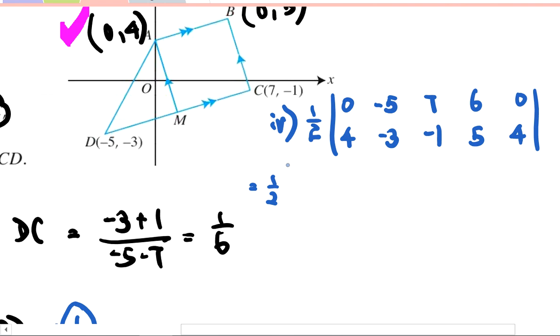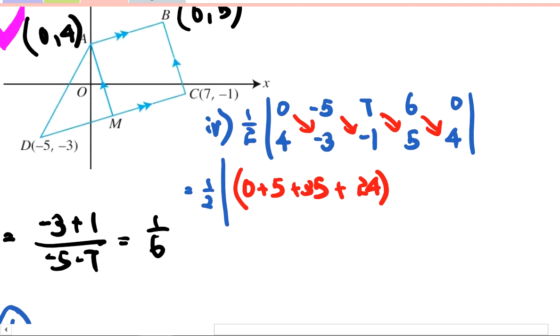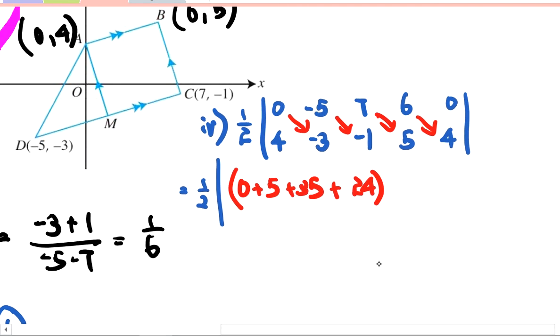Using the shoelace formula: top down first using the diagonal. I've shown you using the arrow—top down first, put it in brackets, sum them together. So you have 0 plus 5 plus 35 plus 24. Now you need to subtract off all the bottom up, so now sum all the bottom ups together: negative 20 minus 21 minus 6 plus 0.